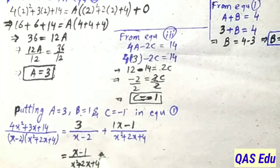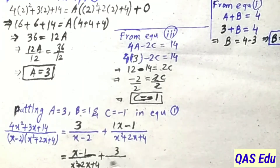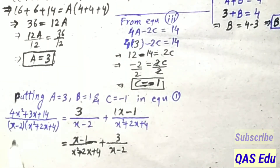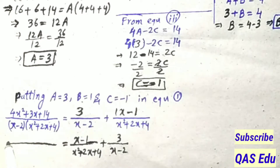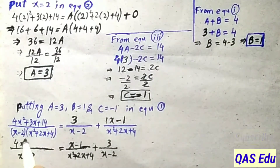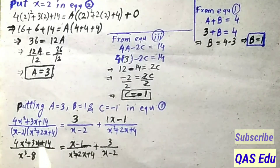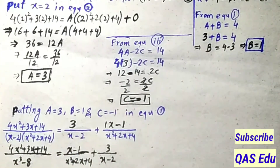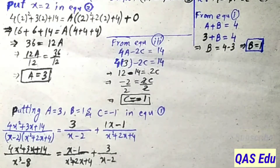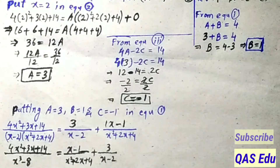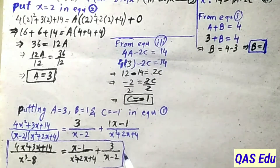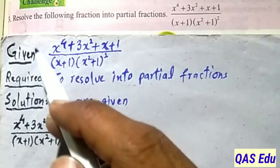The result is: 3 over (x - 2) plus (x - 1) over (x² + 2x + 4). The given fraction with denominator x³ - 8 equals 4x² + 3x + 14 has been resolved into these two partial fractions. This completes question number 9.